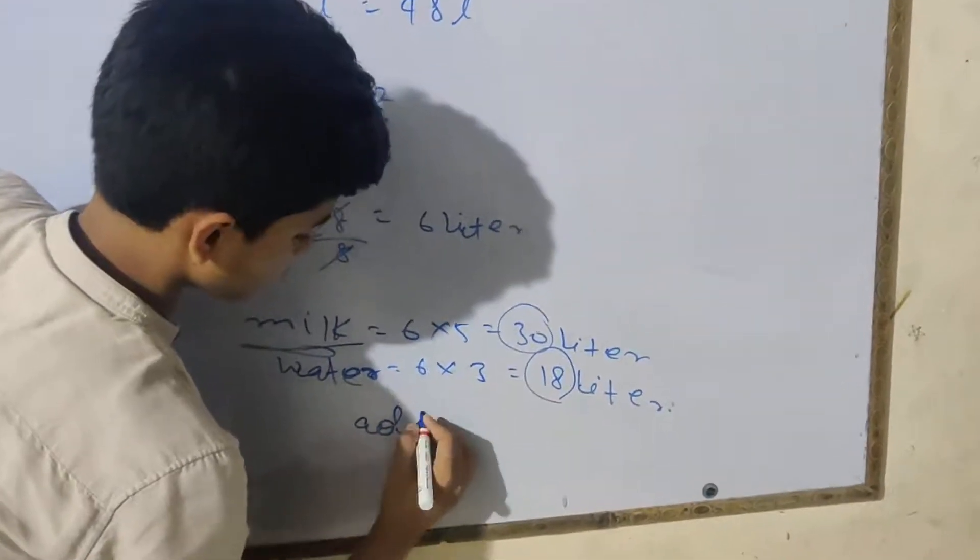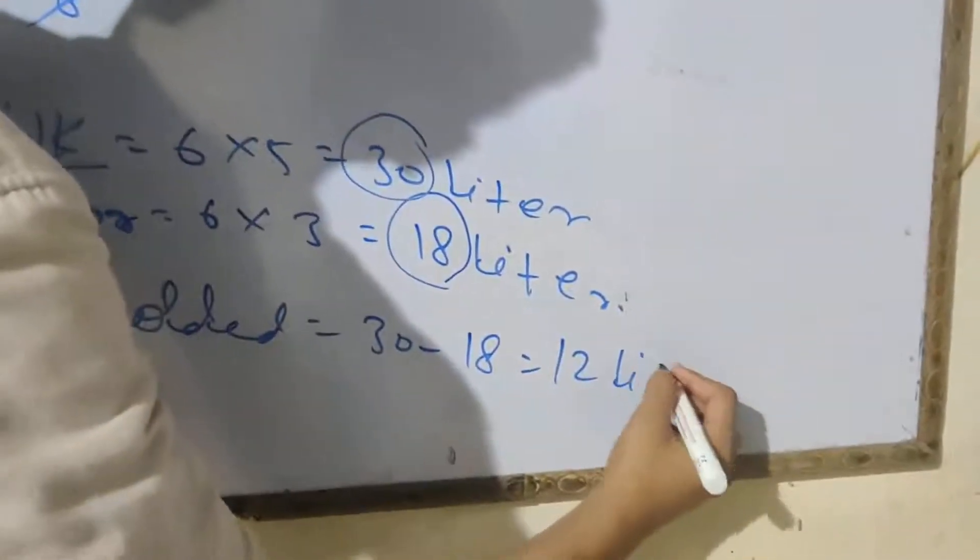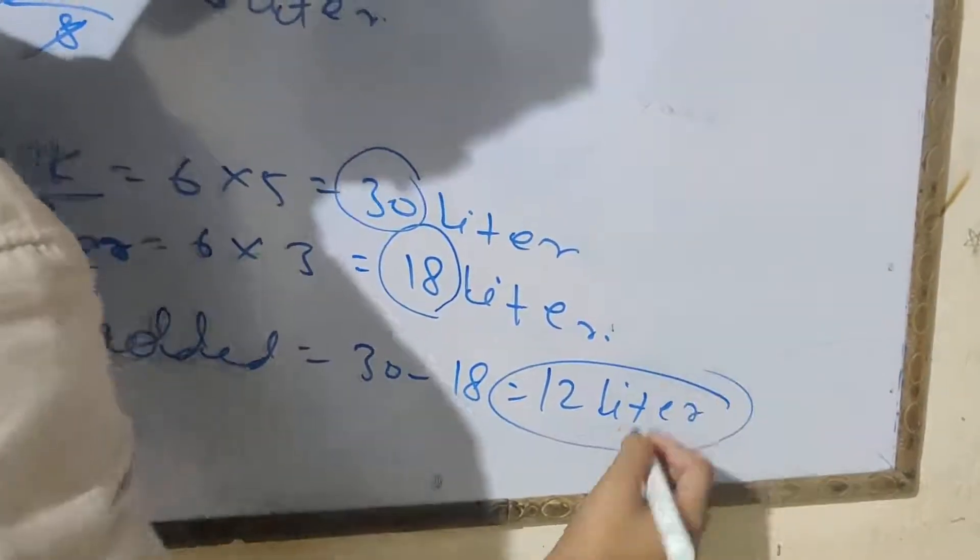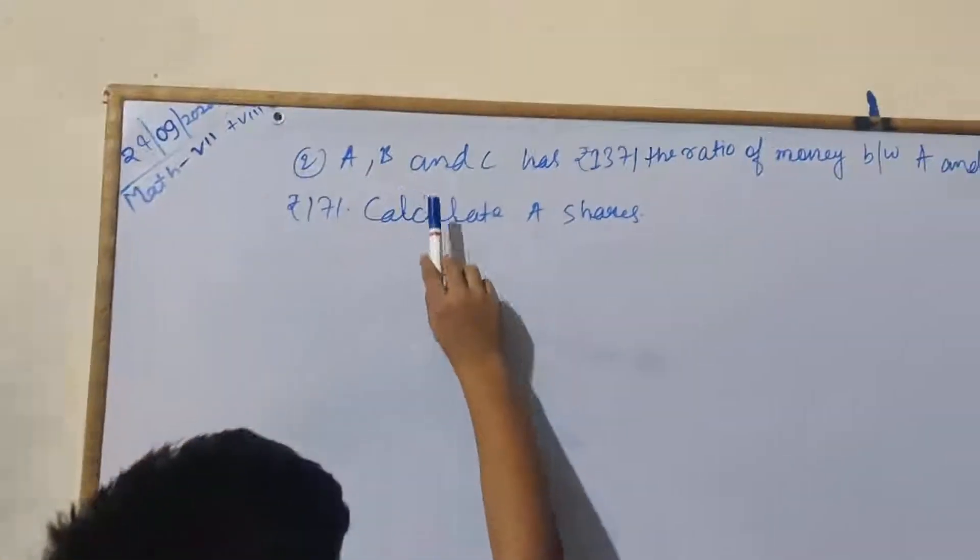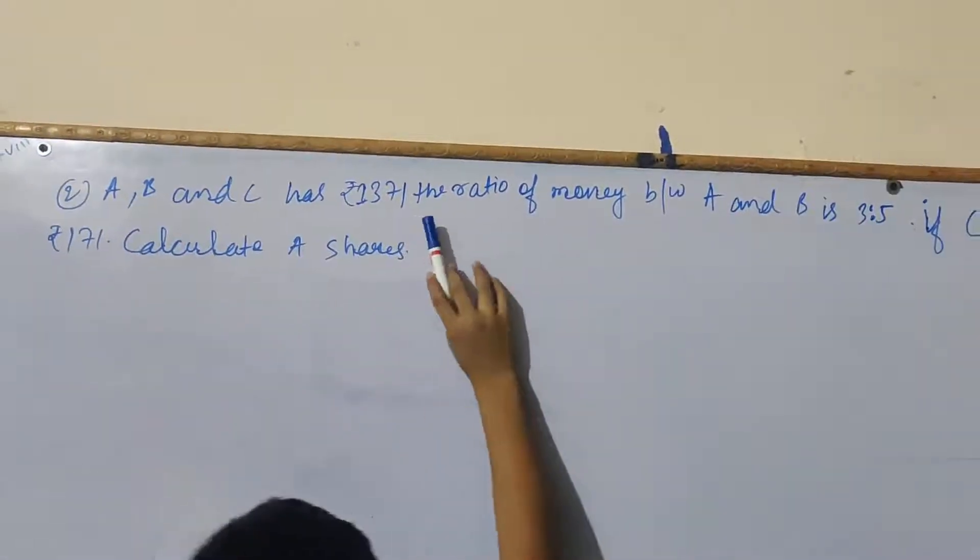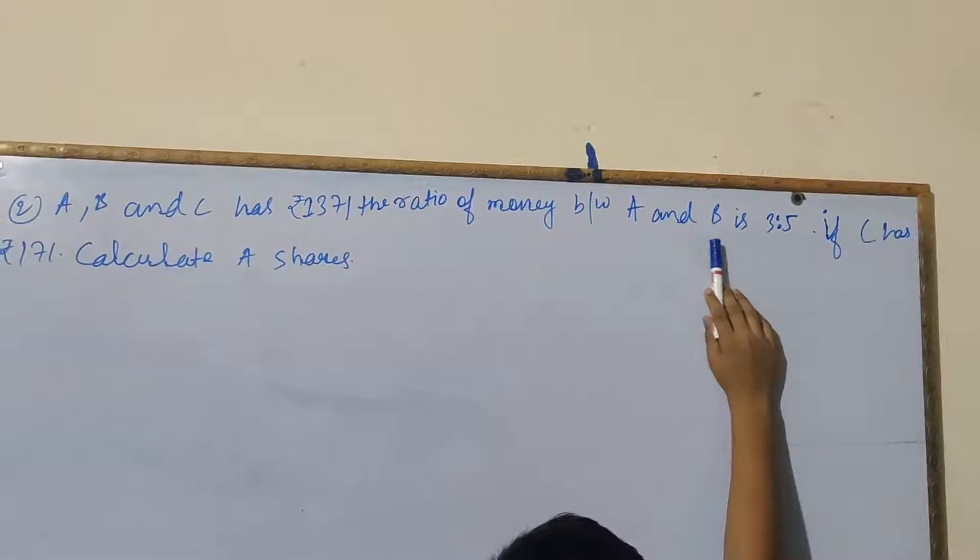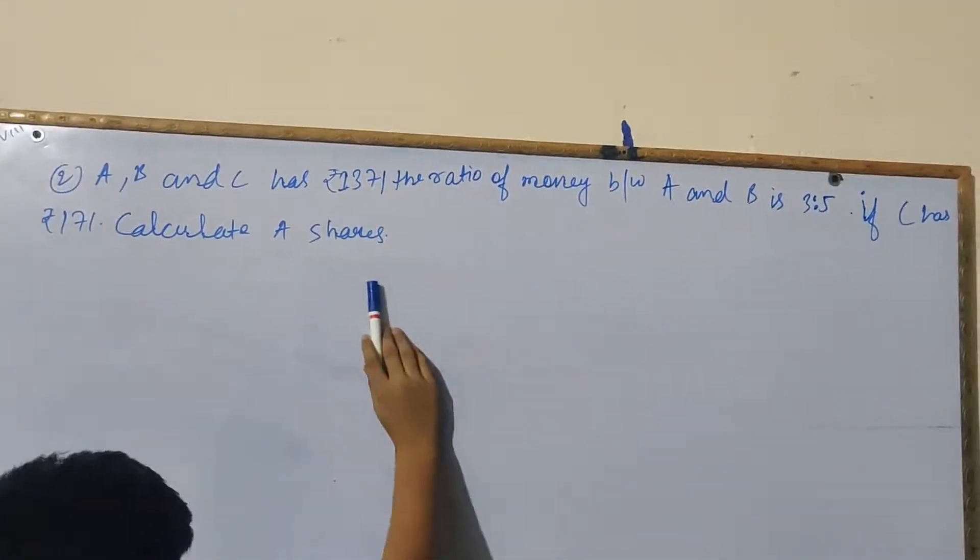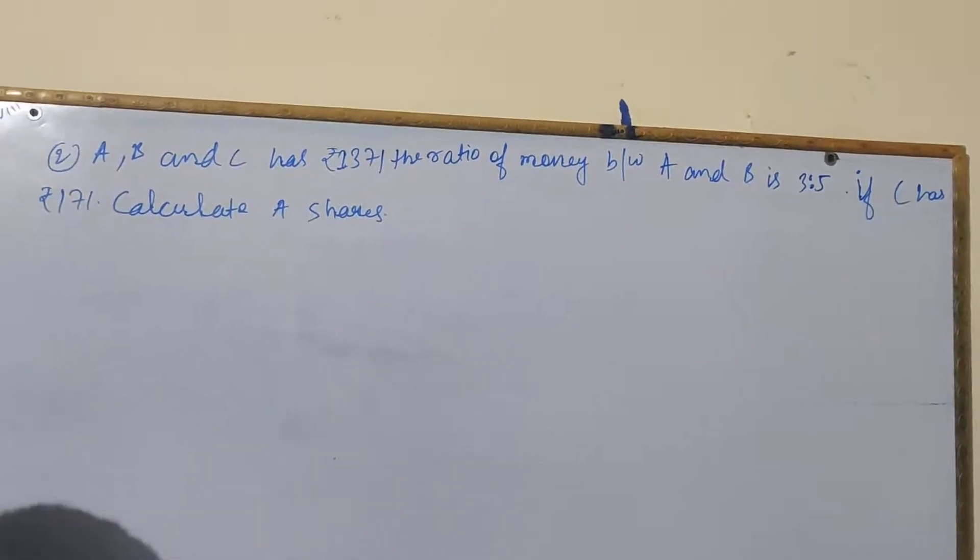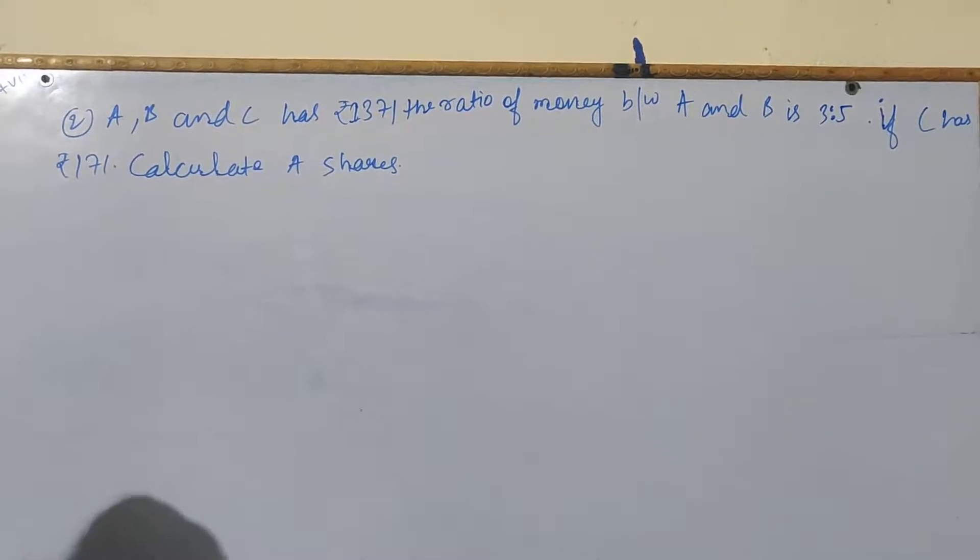So milk equals 5 times 6, which is 30 liters. Water equals 3X equals 3 times 6, which is 18 liters. We need to add the ratio of both to make them equal.